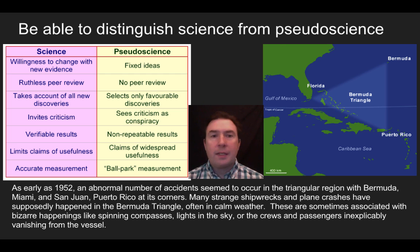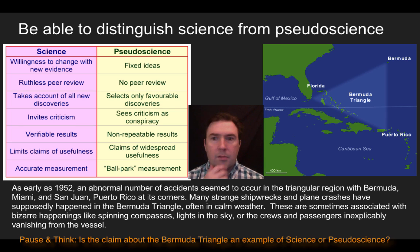So as early as 1952, an abnormal number of accidents seem to occur in the triangular region with Bermuda, Miami, and San Juan, Puerto Rico as its corners. Many strange shipwrecks and plane crashes have supposedly happened in the Bermuda Triangle, often in calm weather. These are sometimes associated with bizarre happenings like spinning compasses, lights in the sky, or crews and passengers that inexorably vanish from the vessel. So what I want you to take a minute is I want you to pause and think. And based solely on the information I've given you is the claim that there's this Bermuda Triangle where ships and planes magically disappear, would you consider that a scientific claim or a pseudoscientific claim? Pause and think.